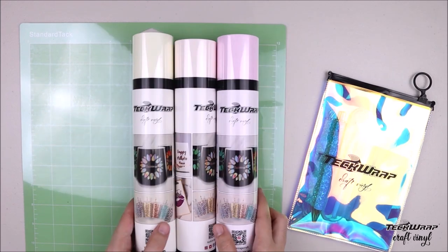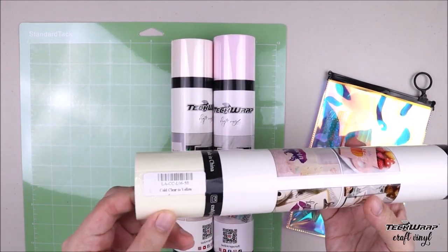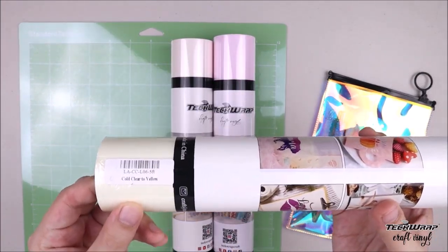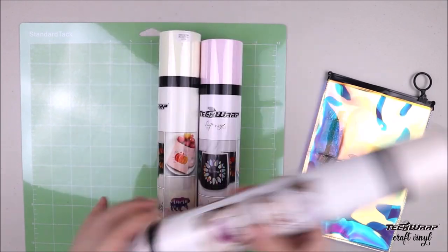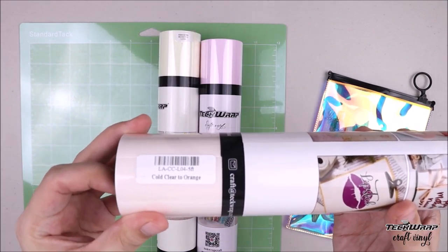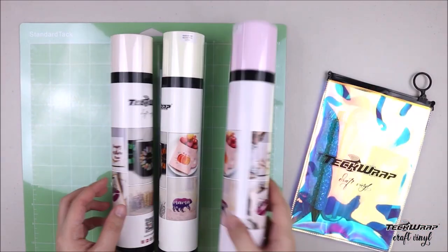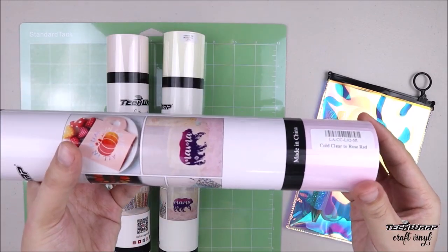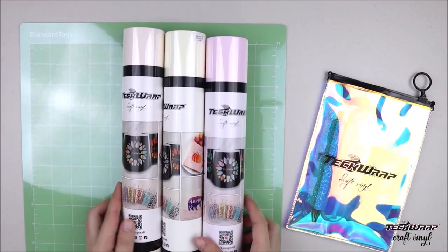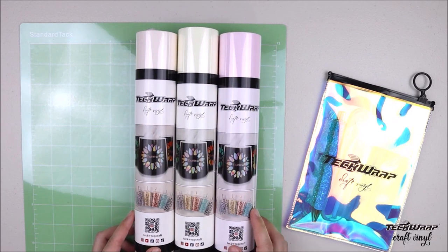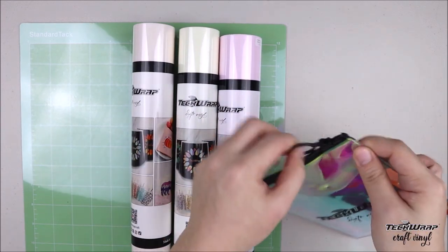I will be using the TechWrap Craft Clear Cold Color Changing Adhesive Vinyl that comes in six colors including red, green, blue, yellow, rose red, and orange. This vinyl has a glossy finish and it will change from clear to colored when chilled below 59 degrees Fahrenheit or 15 degrees Celsius.